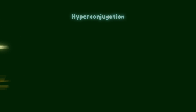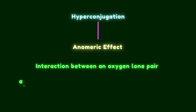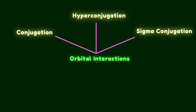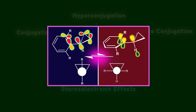In this video, we'll focus on a specific type of hyperconjugation known as the anomeric effect, which is defined as the interaction between an oxygen lone pair and the anti-bonding orbital of a suitable acceptor bond. All three types of delocalization are based on orbital interactions, collectively known as stereoelectronic effects. I've created another video where I explain this concept in more depth — you can find the link in the description along with many interesting examples of this phenomenon.